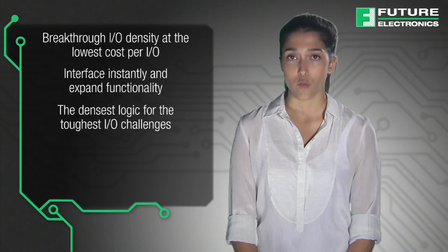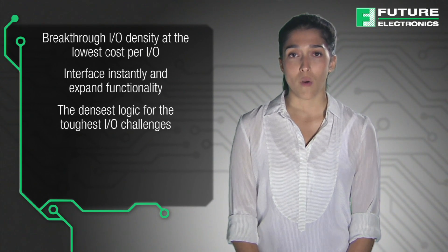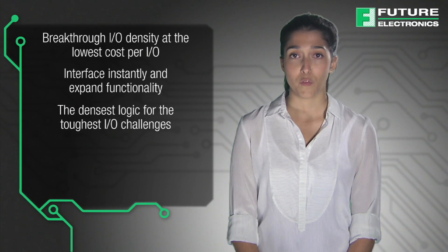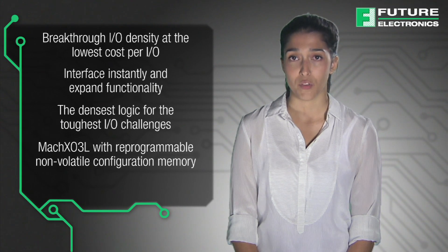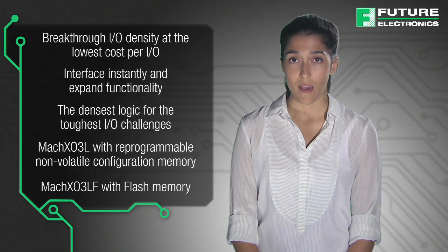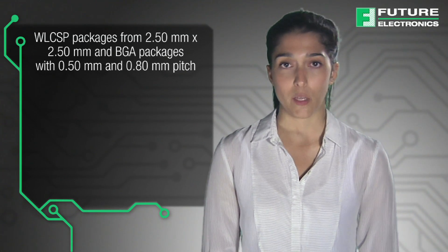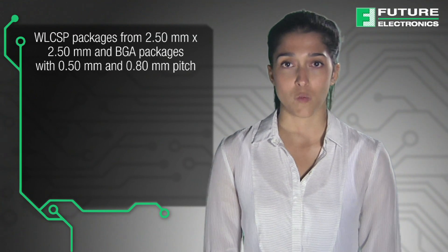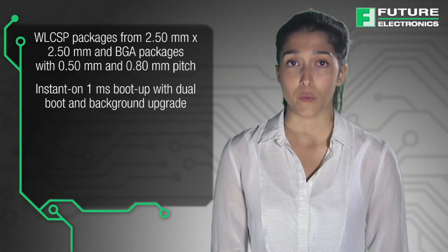The densest logic for toughest I/O challenges: ensure high I/O performance with I/O logic density ranging from 640 to 6.9k LUT4. With the Mach XO3 family, customers now have multiple footprint compatible options. The Mach XO3L device offers low-cost reprogrammable non-volatile configuration memory (NVCM), and now the Mach XO3LF device with flash memory. Available in amazingly small WLCSP packages from 2.5mm by 2.5mm, with instant-on 1ms boot up with dual boot and background upgrade.